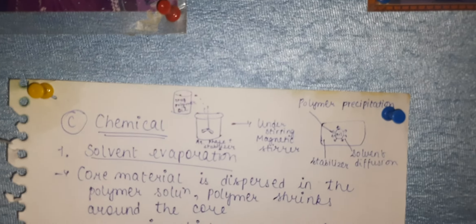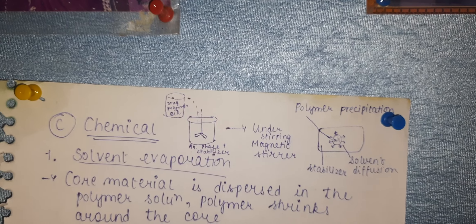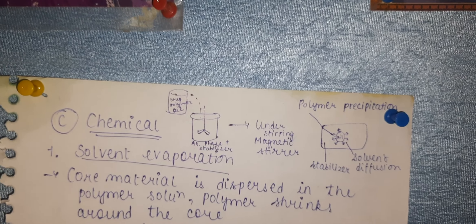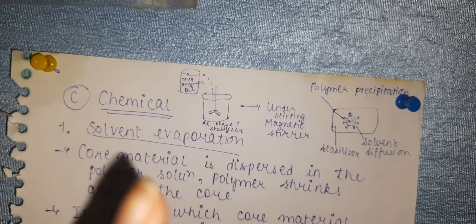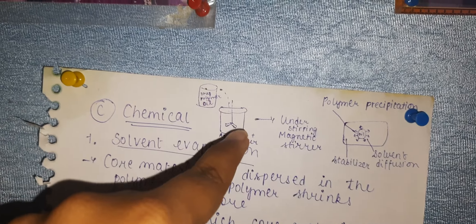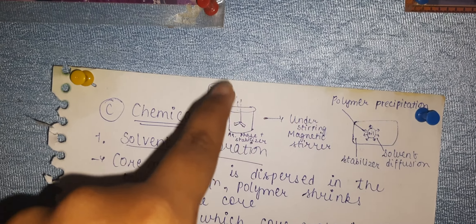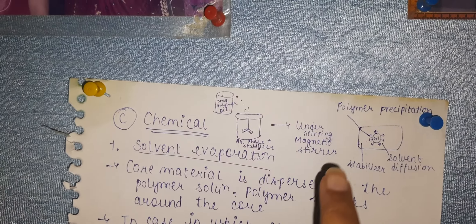Now, we'll dive into the solvent evaporation process. In one beaker, we have the drug, polymer, and oil. In another beaker, we have the aqueous phase and stabilizer. We slowly pour the drug-polymer-oil mixture into the aqueous phase with stabilizer, then use a magnetic stirrer.